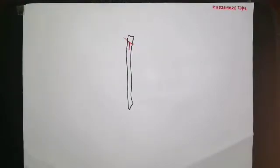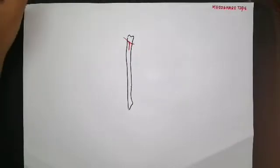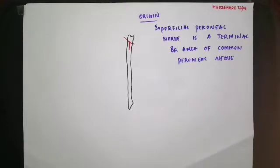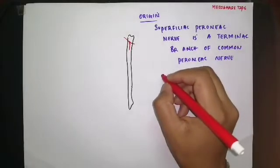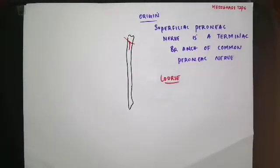The superficial peroneal nerve goes into the lateral compartment of the leg, making it the nerve of the lateral compartment. The superficial peroneal nerve is one of the terminal branches of the common peroneal nerve, given out in the region of the neck of the fibula. Regarding its origin, it originates as a terminal branch of the common peroneal nerve.